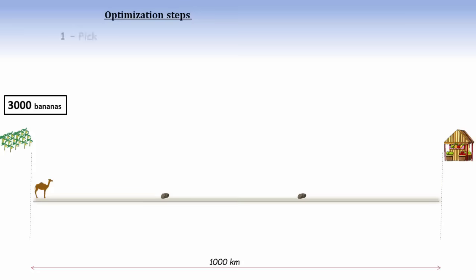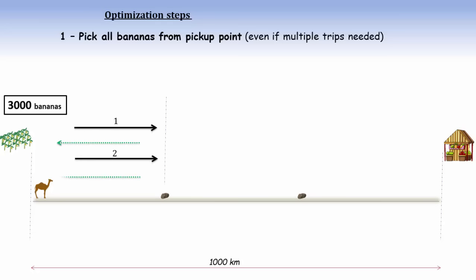Number 1. The camel should pick up all the bananas from the pickup point even if you need multiple trips. Only then you will get maximum number of bananas in the end. So in this situation where there are 3000 bananas, the camel would need to make 3 forward trips to pick all of them. In this process of transfer, it also needs to make 2 backward trips. So overall there are 5 trips.